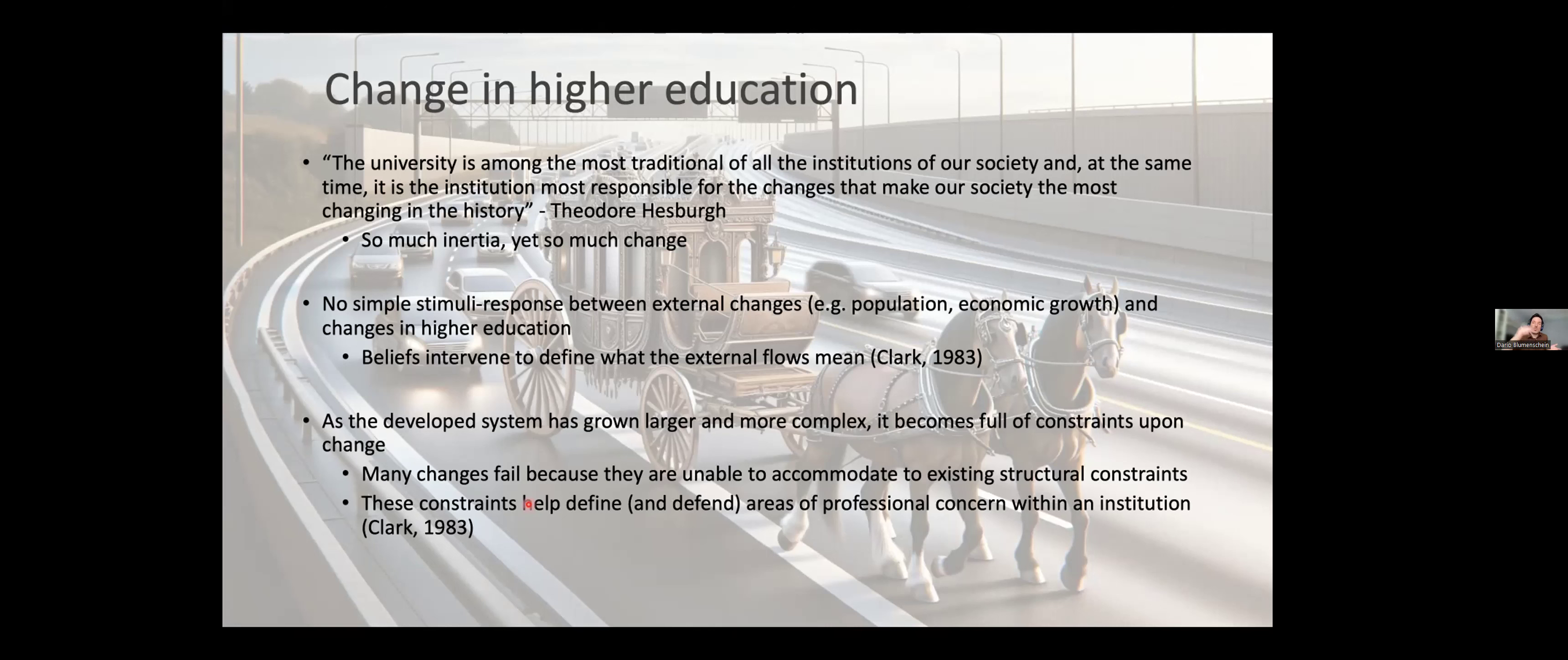In theory, they always say that there has to be a difference between an emerging system, a very new one, and a system that is developed, such as higher education. And when you have such a large and complex system, it becomes full of constraints upon change. And then they say that many changes have failed because they were unable to accommodate to these existing structural constraints. And these constraints are very important because they help us define and also defend areas of professional concern within an institution.